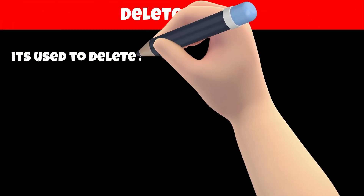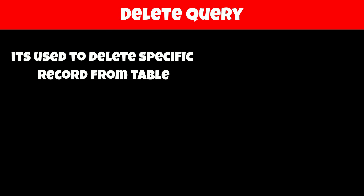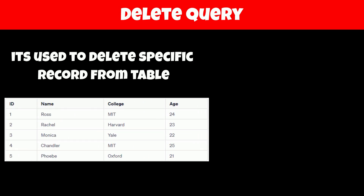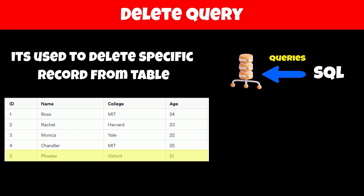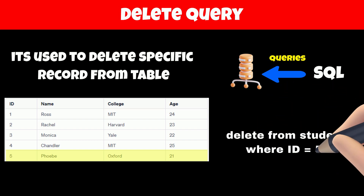The DELETE query is used to delete a specific record from the table. For example, if a student table has 5 records and we want to delete the student with id equal to 5, then we will use the DELETE query. Queries in SQL are a way of talking to the database, so we just tell the database which record we want to delete. The query for deleting that data is: DELETE FROM student WHERE id = 5.